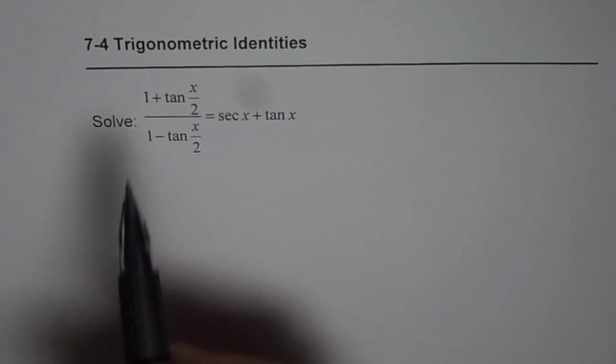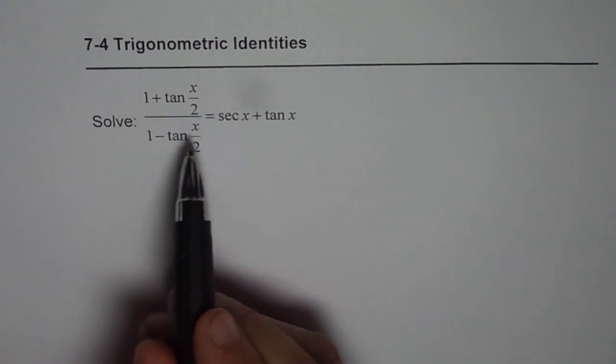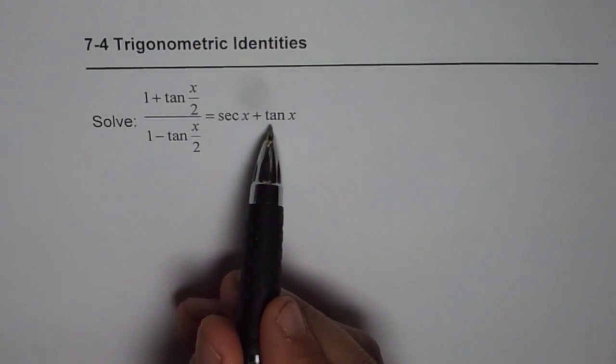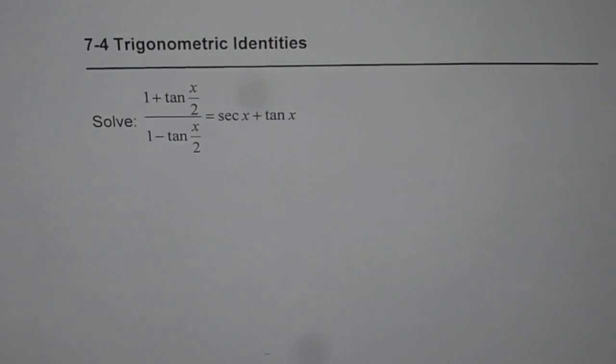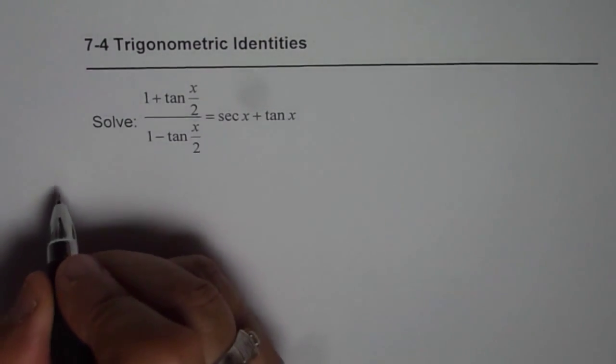We have (1 + tan(x/2))/(1 - tan(x/2)) = sec(x) + tan(x). In the very first step, we'll start with the left side.